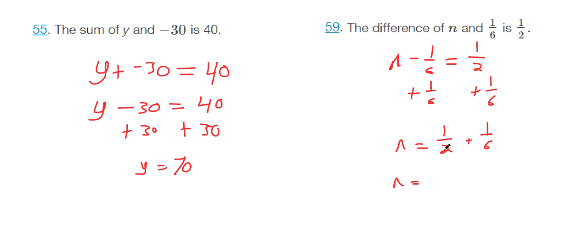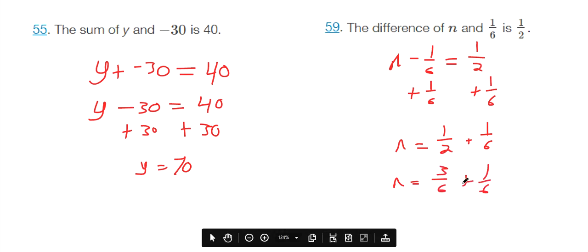Or if you convert this fraction to common denominators, 3/6 plus 1/6, so you get 4 over 6, which is 2 over 3.